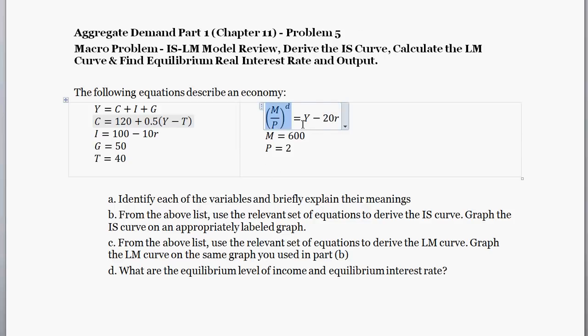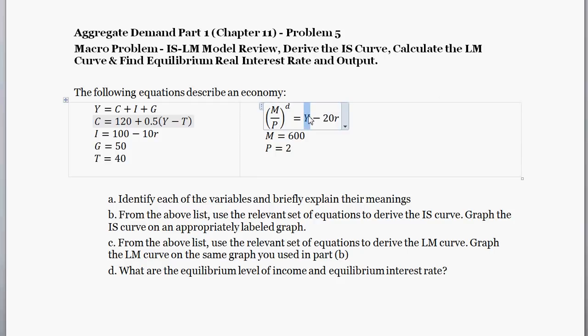Money demand equals how much goods and services are produced minus 20 times the real interest rate. The intuition: if you have savings, you can either leave it as cash or invest it and earn interest rate R. If R is high, you want to convert money into investment, so money demand falls. Conversely, if real income increases and GDP goes up, we can expect money demand to go up as well.